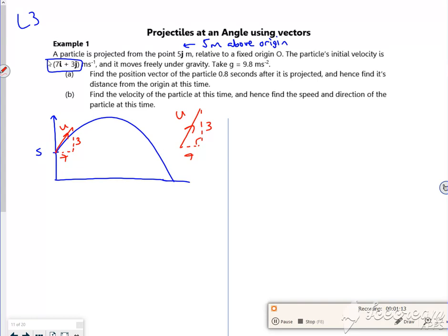So find the position vector. So I just want to find the x and the y values when t is 0.8.